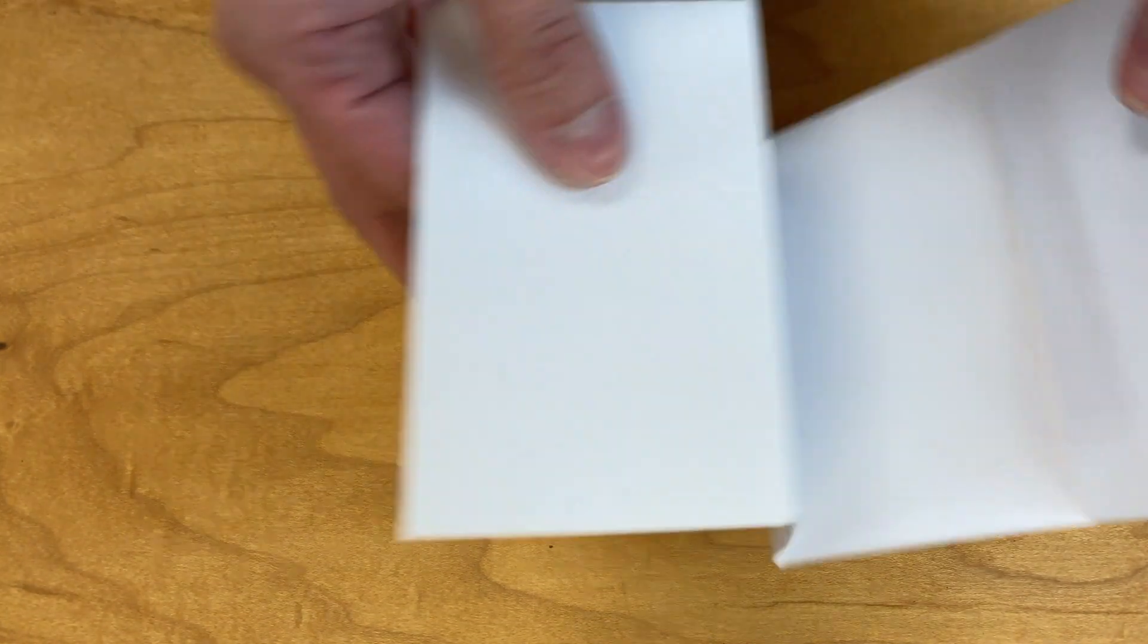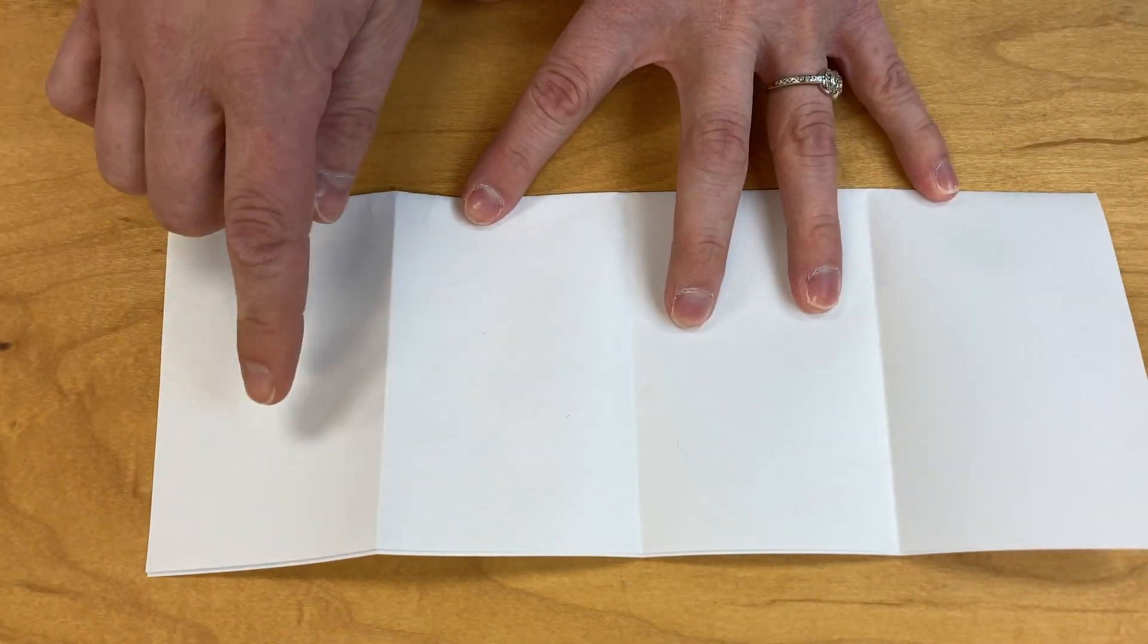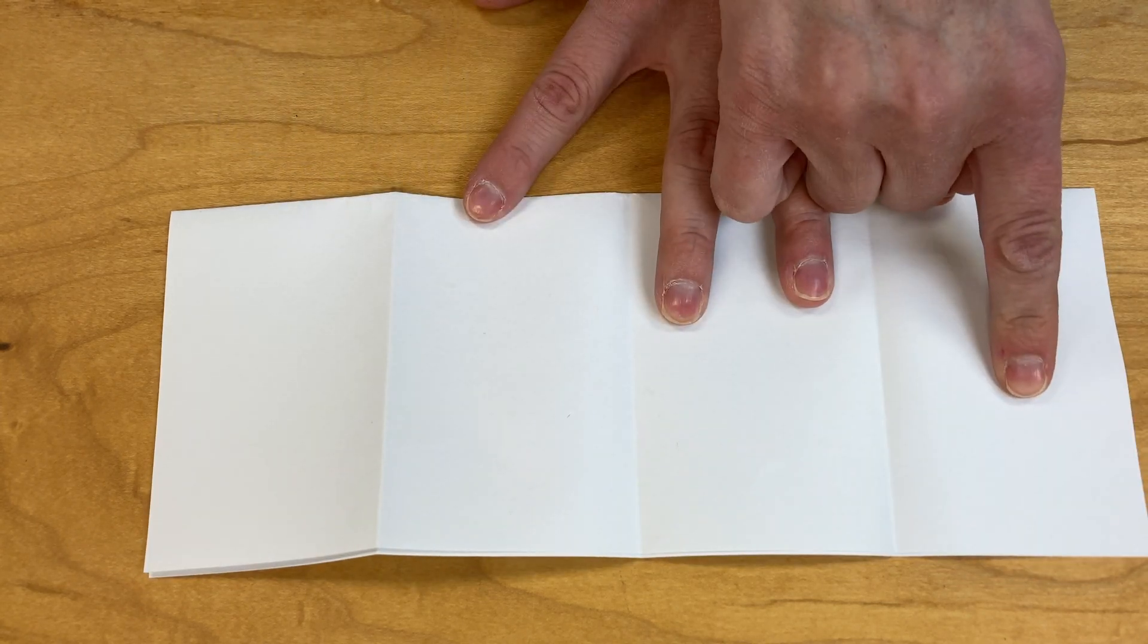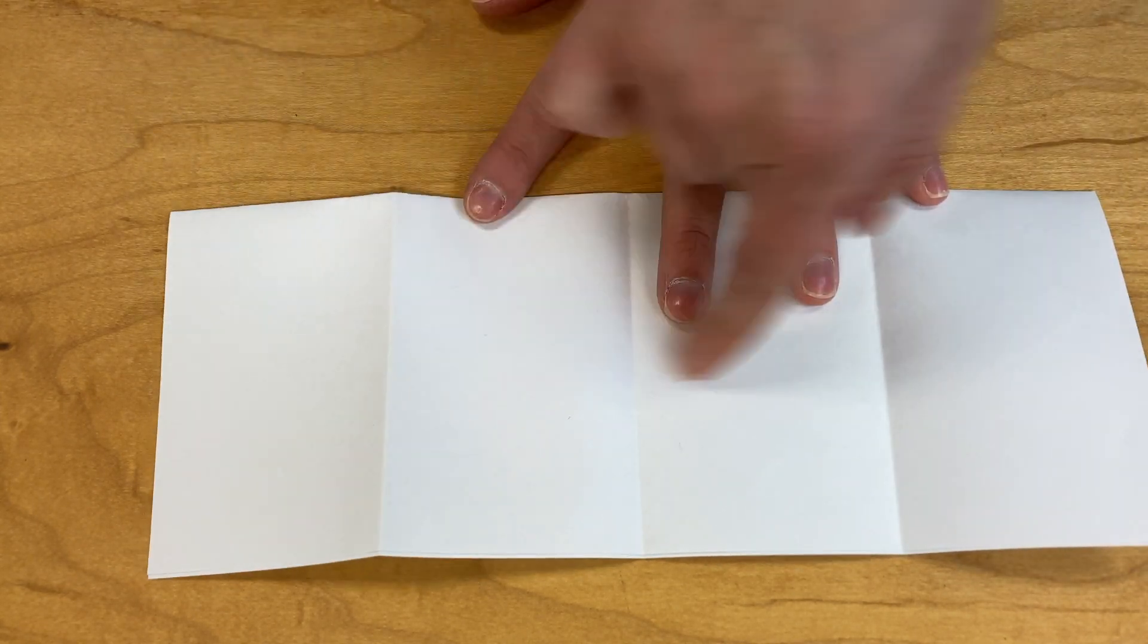When you unfold it you should see that you have one, two, three, four rectangles, the folds across your paper.